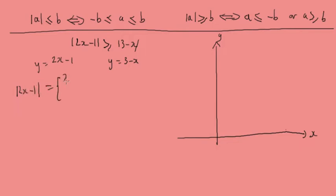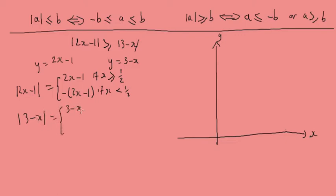The modulus of 2x minus 1 equals 2x minus 1 if x is greater than or equal to a half, or minus(2x minus 1) if x is less than or equal to a half. And 3 minus x equals 3 minus x if x is less than or equal to 3, or minus(3 minus x) if x is greater than 3. Let's draw these on the axes.